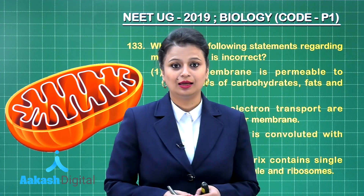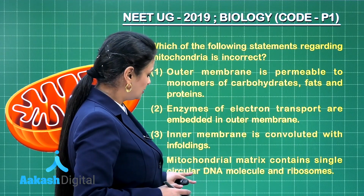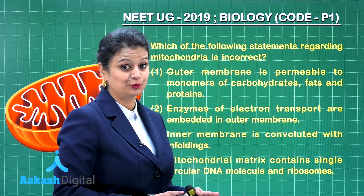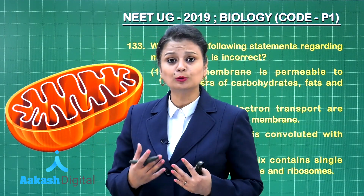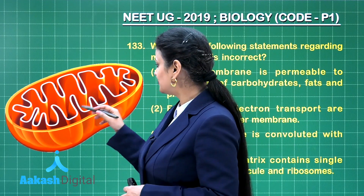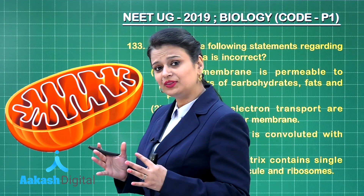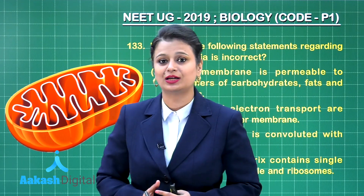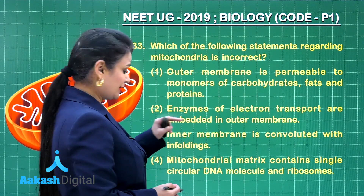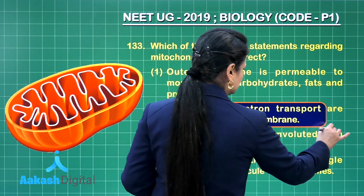These infoldings are known as cristae. The last option states that the mitochondrial matrix contains a single circular DNA molecule and ribosomes. Mitochondria and chloroplasts possess their own DNA — a double-stranded circular DNA — along with 70S ribosomes. So the incorrect statement is option number two: ETS enzymes embedded in the outer membrane.